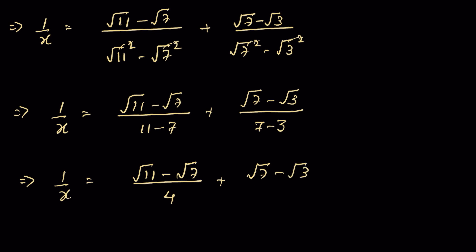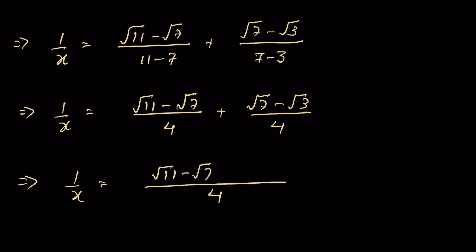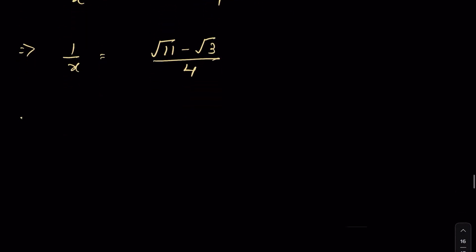Since 4 is the common denominator: 1/x = [√11 − √7 + √7 − √3] / 4. The +√7 and −√7 cancel each other. Therefore 1/x = (√11 − √3) / 4, which means x = 4 / (√11 − √3).